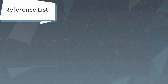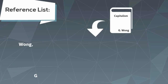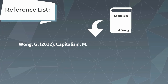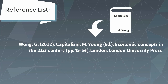For example, if you have cited some information from chapter 3, Capitalism, written by Gavin Wong, then you should write: Wong, G. (2012). Capitalism. In M. Young (Ed.), Economic Concepts in the 21st Century (pp. 45–46). London: London University Press.